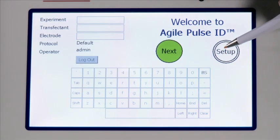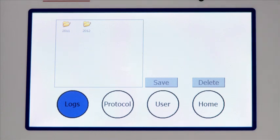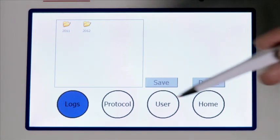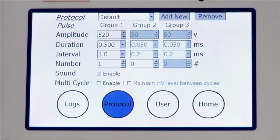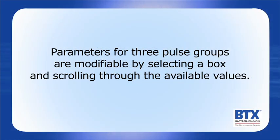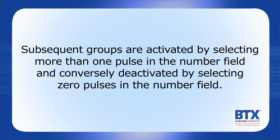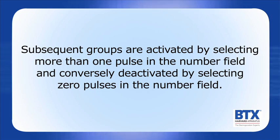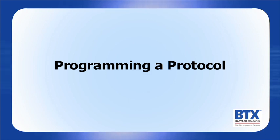To set up a protocol, click on Setup, then on the next screen click Protocol. Parameters for three pulse groups are modifiable by selecting a box and scrolling through the available values. Subsequent groups are activated by selecting more than one pulse in the number field, and conversely deactivated by selecting zero pulses in the number field. The protocol can be named and saved in the protocol logs.